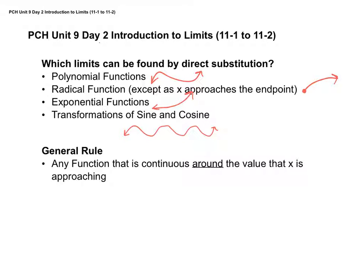We're talking about vertical asymptotes. Let's say we have a rational function with an asymptote right here. If x is approaching the value of that asymptote, then no, I can't just plug it in because it's not even defined there.